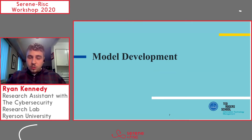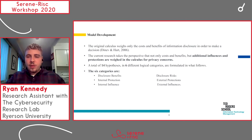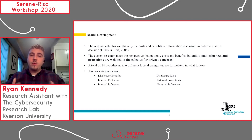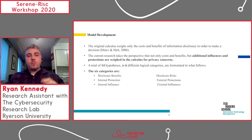So how was this model developed? As mentioned, the original calculus has costs and benefits. However, we took the perspective that additional influences and protections are weighed by individuals in the calculus for privacy concerns. We have a total of 14 hypotheses and six different logical categories: the original disclosure benefits and risks, and then the added internal protection, external protection, internal influence, and external influence.